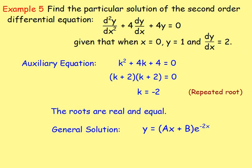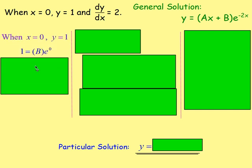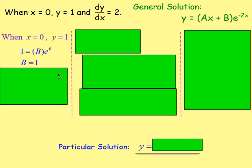We have the additional information to find the values of a and b. With the general solution y = (ax + b)e^(−2x): when x is 0 and y is 1, we replace y with 1. We have 1 equals (a·0 + b)·e^(0). The a term disappears, e^(0) = 1, so b = 1.